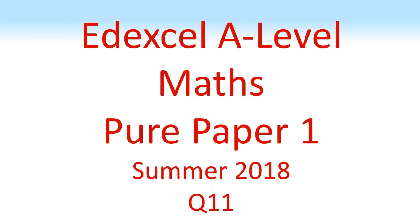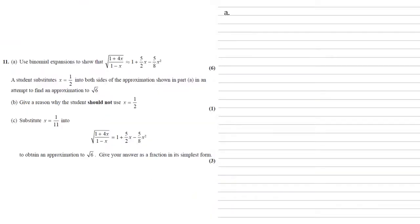Edexcel A-Level Maths, Pure Paper 1, Summer 2018, Question 11. Use binomial expansions to show that the square root of 1 plus 4x over 1 minus x is approximately equal to 1 plus 5 over 2x minus 5 eighths x squared.